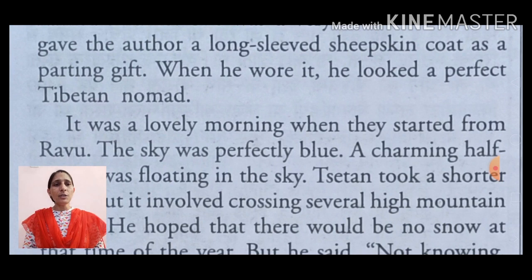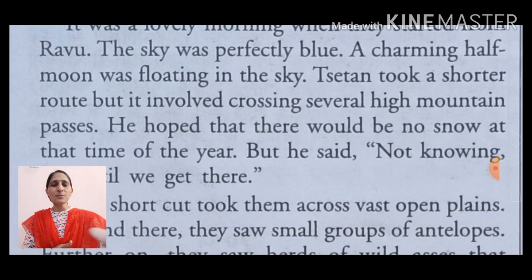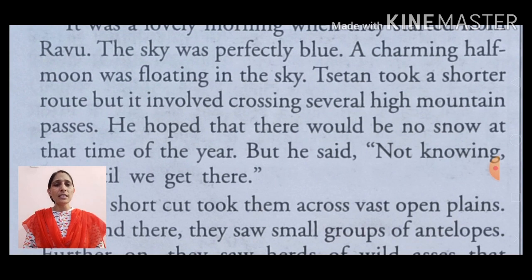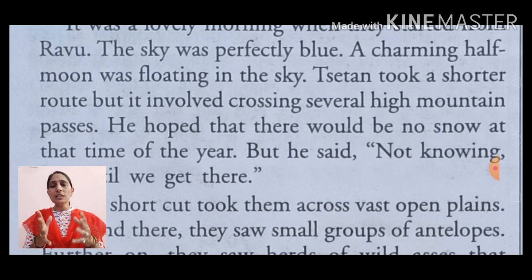It was a lovely morning when they started from Rao — यह बहुत प्यारी सुबह का समय था जब उन्होंने अपनी यात्रा शुरू की Rao से, Kailas पर्वत की तरफ चले। The sky was perfectly blue — आसमान पूरी तरह नीला था। A charming half-moon was floating in the sky — एक आकर्षित करने वाला half-moon आसमान में तैर रहा था। Satan took a shorter route — Satan ने एक छोटे मार्ग को अपनाया, but it involved crossing several high mountain passes — परंतु इसमें शामिल था कि उन्हें इस मार्ग से पार करने थे पर्वतीय दर्रों को।